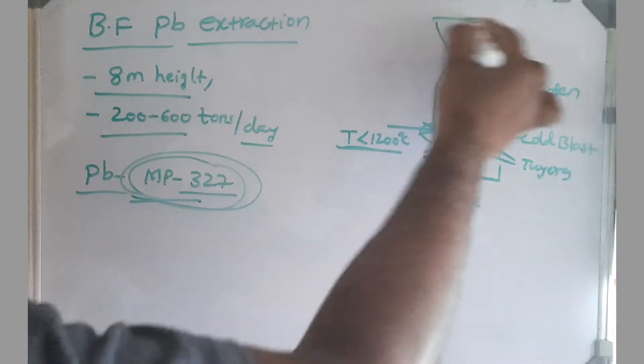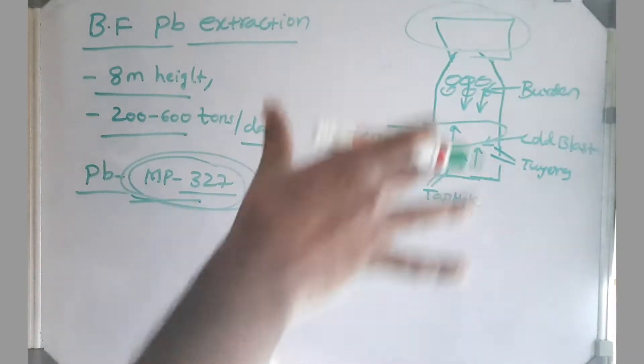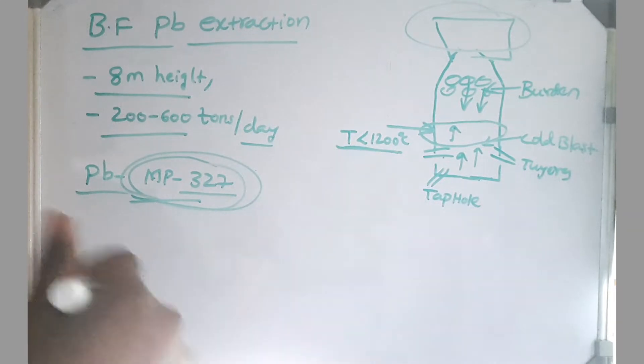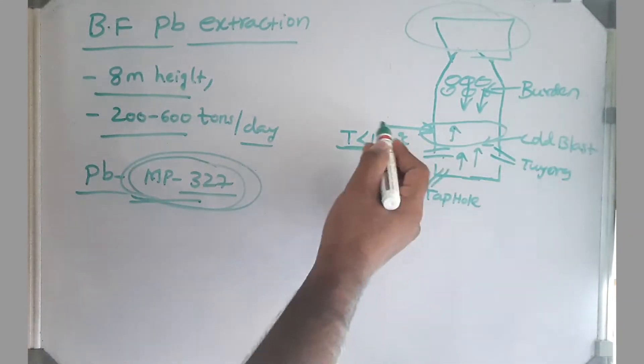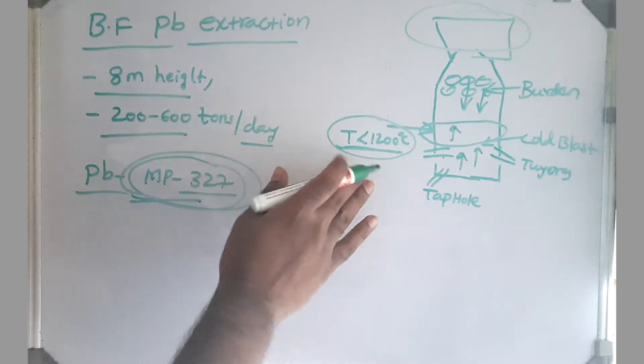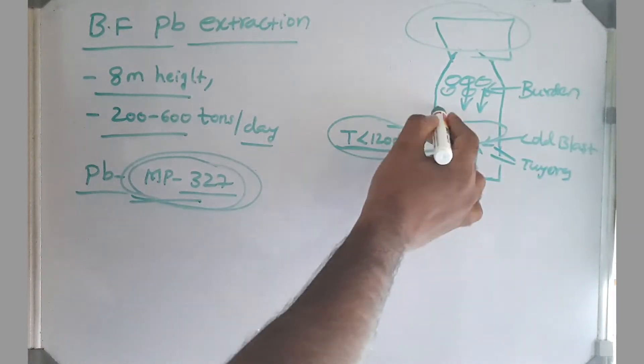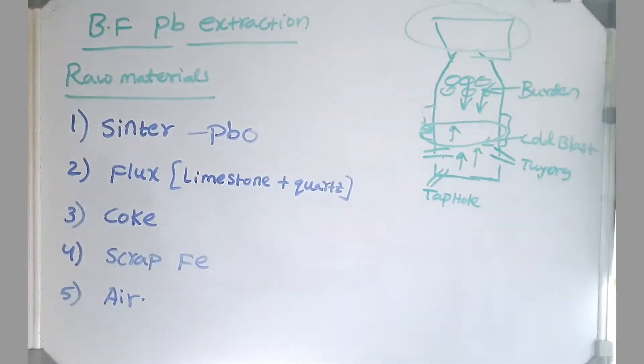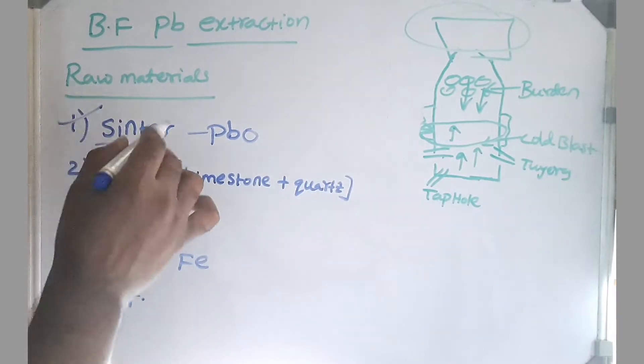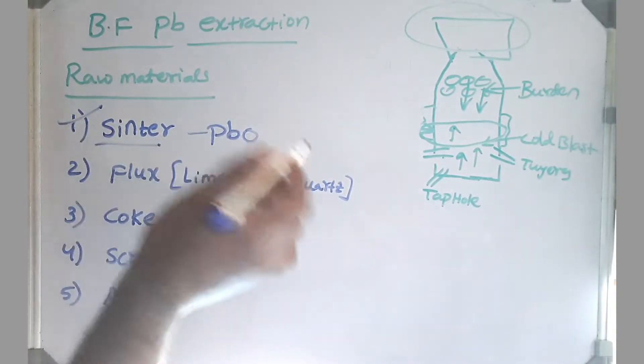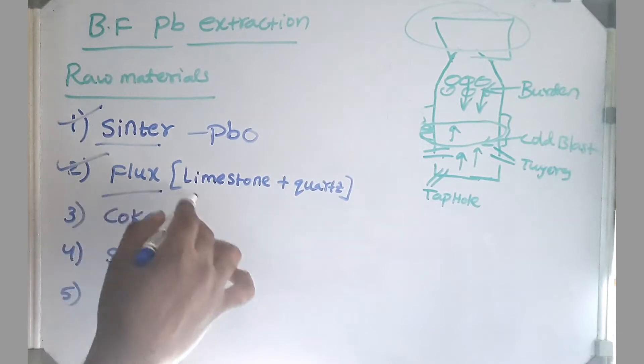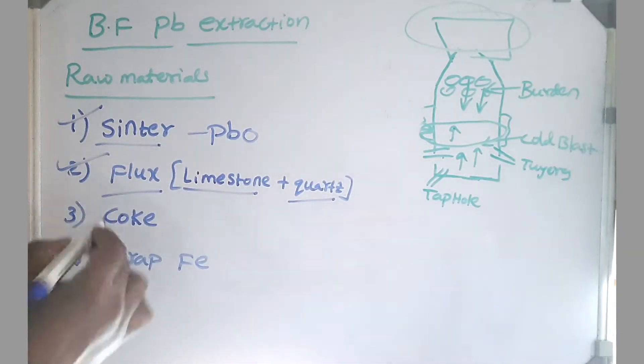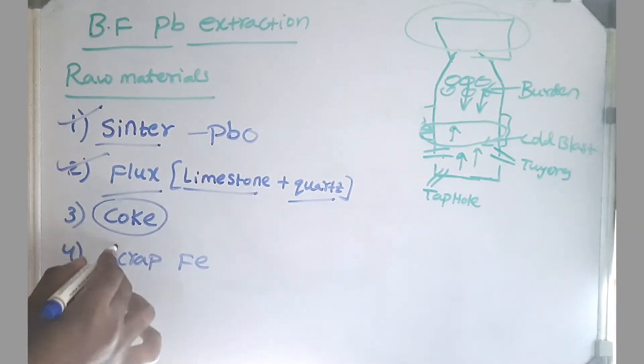So we have to reduce this. We always lose. That is why we keep electrostatic precipitators at the top of the blast furnace to recover the lead which we lost in the fumes. To reduce that, we always try to keep the temperature at this lower level. If at all temperature goes to the higher level, we even cool it with water supply as well. Let's look at raw materials. Raw material one is sinter which we got from Dwight-Lloyd sintering formation. Number two is flux.